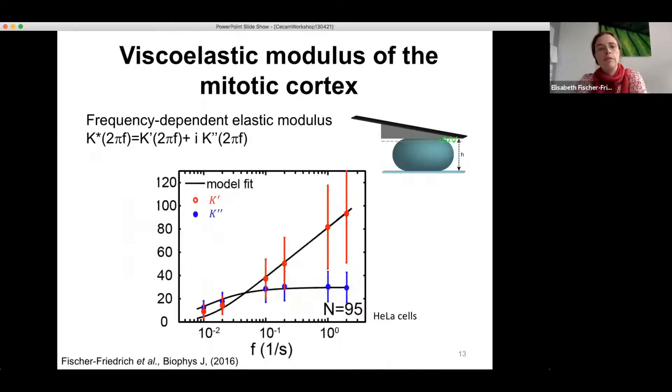So we measured the viscoelastic stiffness of the cortex at different frequencies. And this is the result here you see in red, the so-called storage modulus, the real part of our elastic modulus. And this describes the solid-like response of the material. And the imaginary part of the elastic modulus, the so-called loss modulus, describes the liquid-like response. And as you can see, we have a high frequency regime for our measurements here where the solid-like response dominates. So the storage modulus is significantly higher than the loss modulus.